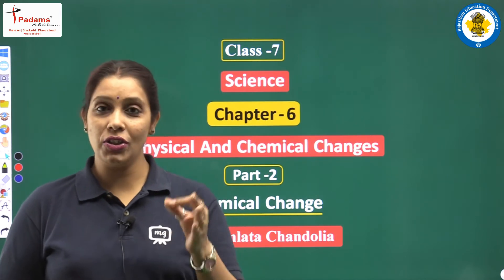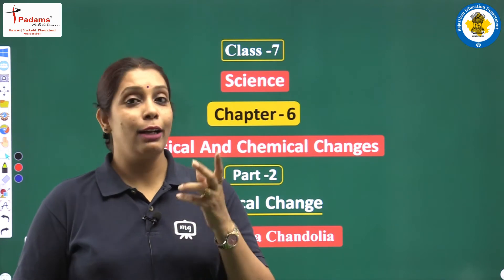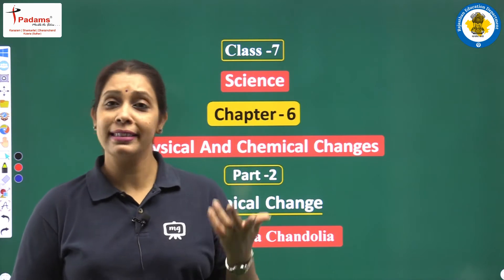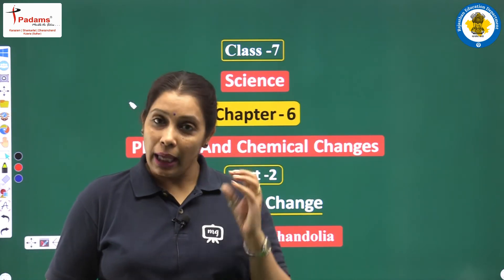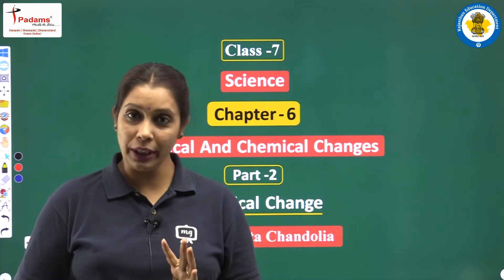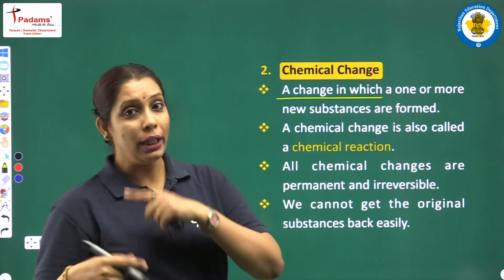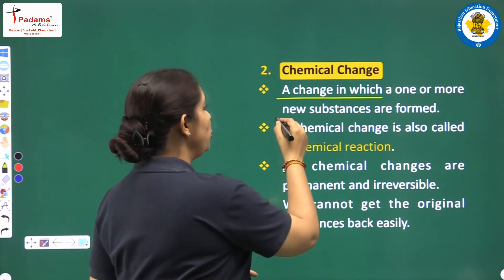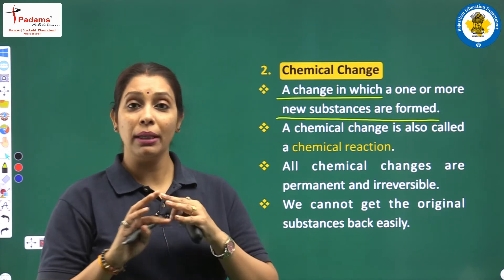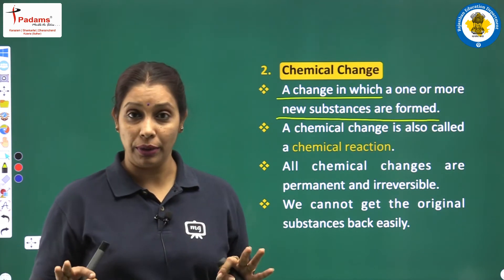Students, you all know what is change and what is physical change — change in physical properties. Physical properties are size, shape, color, state. But chemical change is a little bit different from physical change. We can say a chemical change is one in which one or more new substances are formed. In physical change, chemical composition does not change and there is no new product formed.